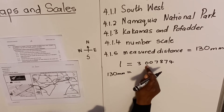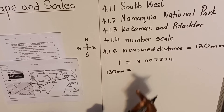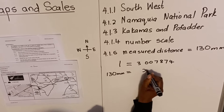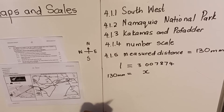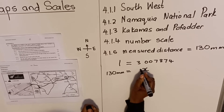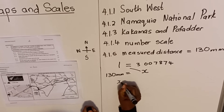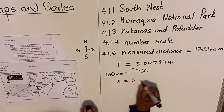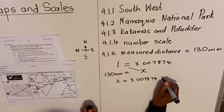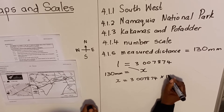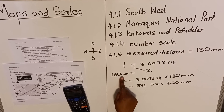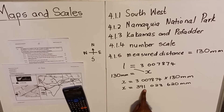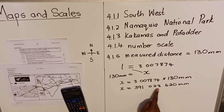So 130 mm on the map equals x on land. I don't know x, so I use a variable. Then I cross-multiply: x equals 130 multiplied by 3,237,874. Using a calculator, the distance on land is approximately 391,023,620 millimeters.